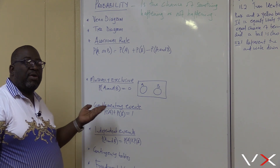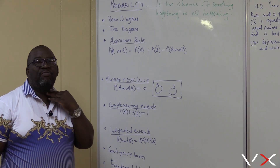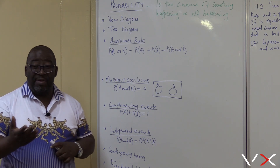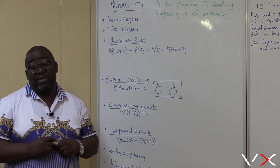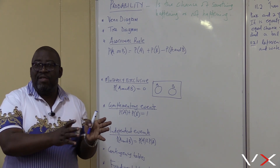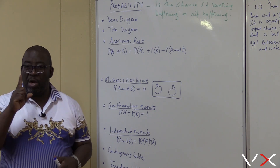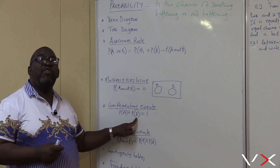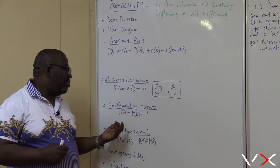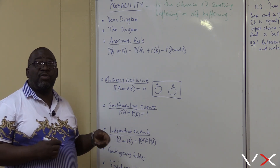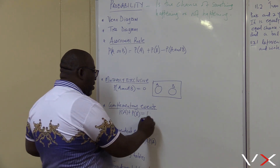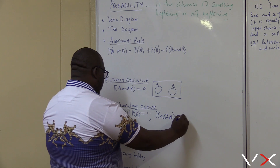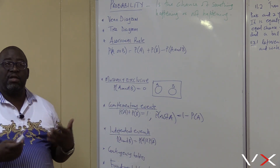Complementary events: Probability of A plus Probability of B equals 1. For example, Kaiser Chiefs has 20 players — 11 playing in the game and 9 reserves. The players playing and the players not playing together form one team, so Probability of A plus Probability of B equals 1. This can also be written as Probability of A plus Probability of not A equals 1. If you need to find Probability of not A, you rearrange: Probability of not A equals 1 minus Probability of A.